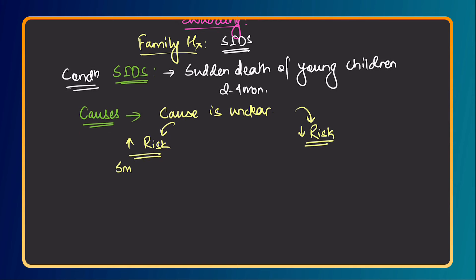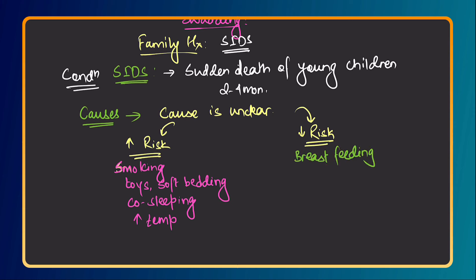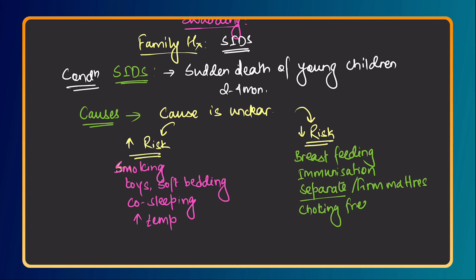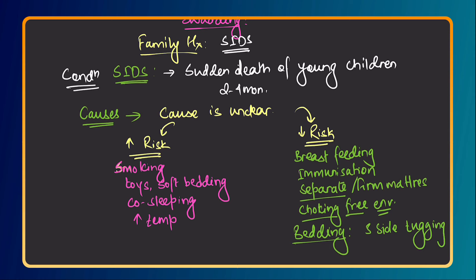Risk factors include: smoking at home, toys and soft bedding in the cot, co-sleeping with the baby, and increased room temperature. Protective factors include: breastfeeding, immunization or vaccination, separate sleeping on a cot, firm mattresses (which reduce the chance of suffocation), and a choking-free environment — not keeping anything on the bed that the baby could choke on. Also mention at-least three-sided tucking of bedding so there are no loose ends in which the baby could become entangled.